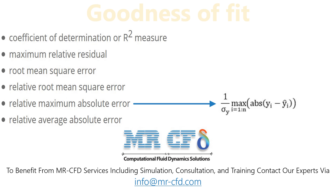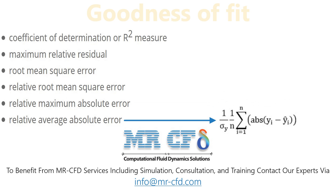The relative maximum absolute error is a criterion equal to the absolute maximum error relative to the standard deviation from the actual output data. The relative average absolute error is a criterion equal to the mean error relative to the standard deviation from the actual output data.